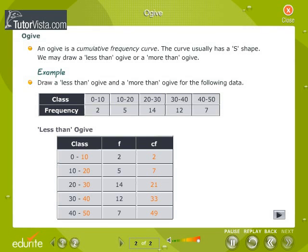An ogive is a cumulative frequency curve. The curve usually has an S shape. We may draw a less than ogive or a more than ogive.